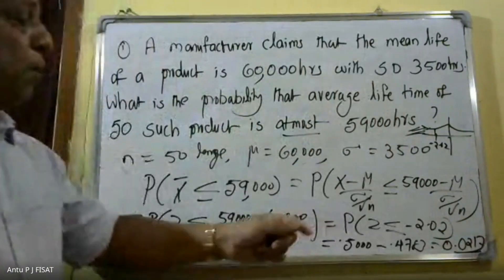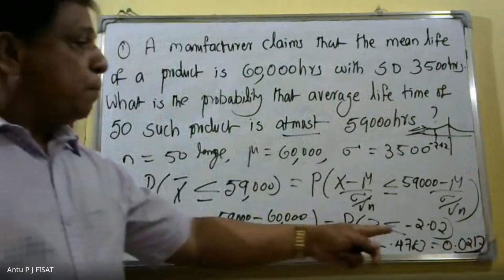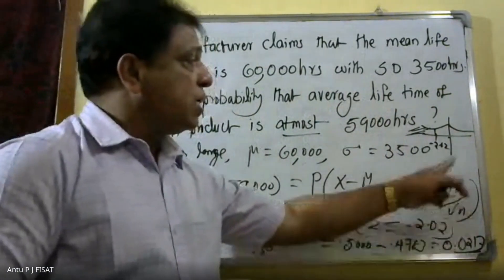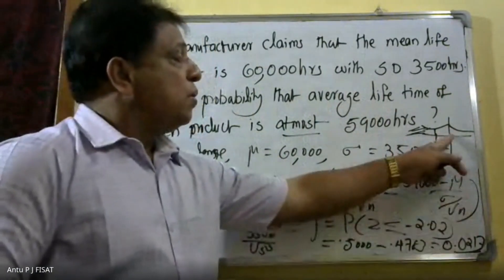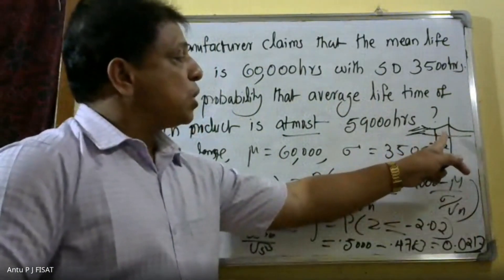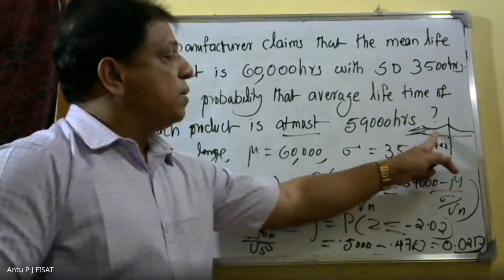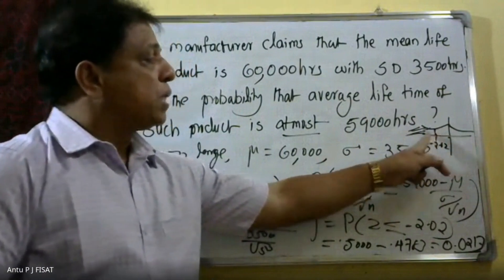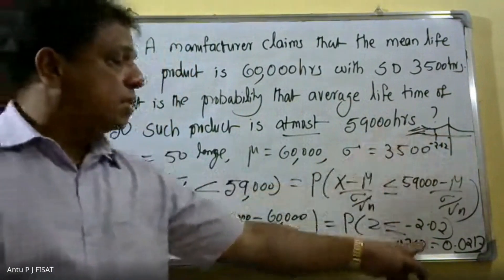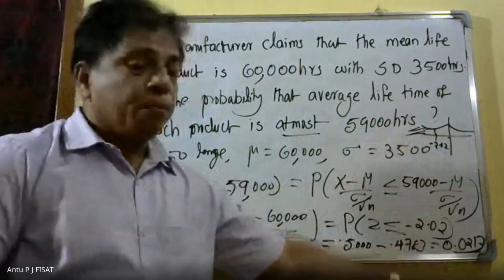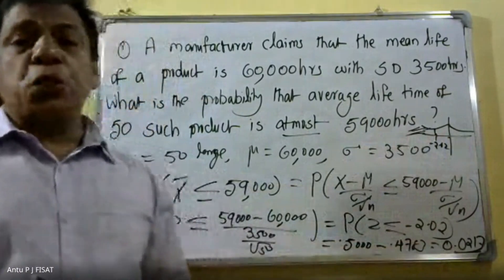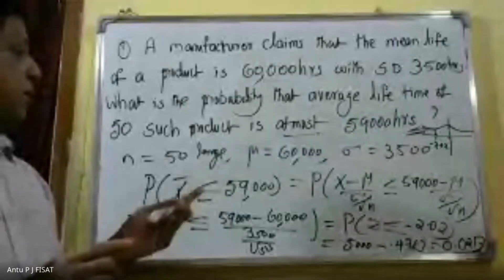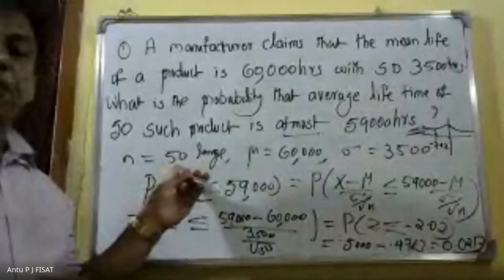Therefore, the probability that the operating lifetime of 50 such products is at most 59,000 hours is 0.0217.